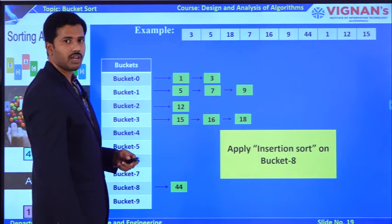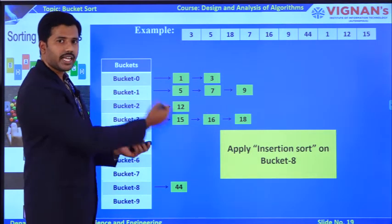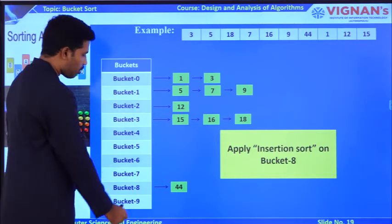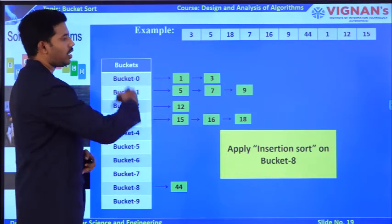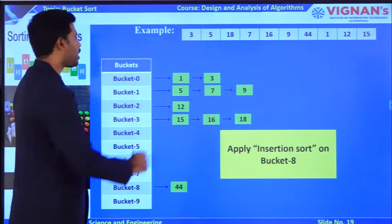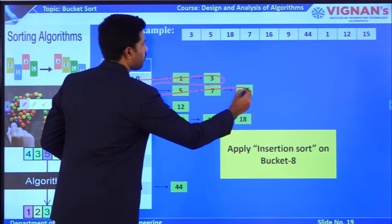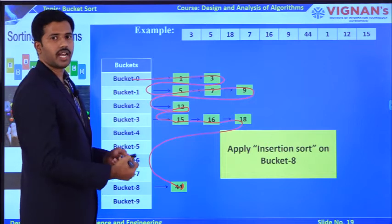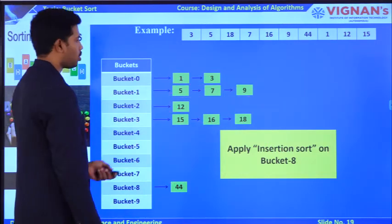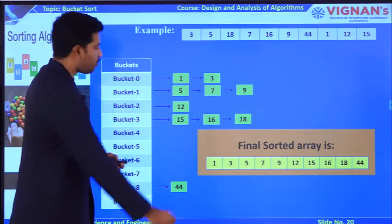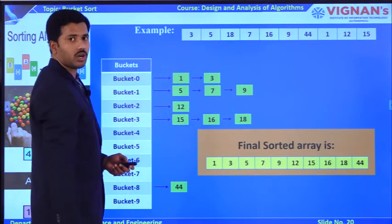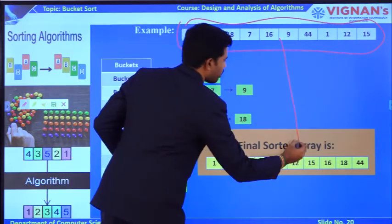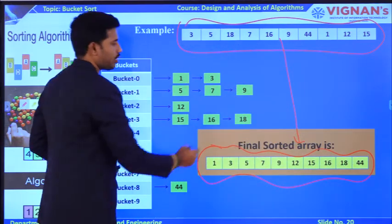Now, observing the elements in each bucket after insertion sort, can I take all elements linearly from bucket 0 to bucket 9? Yes, because all elements in each bucket are now in sorted manner. Taking them in order gives: 1, 3, 5, 7, 9, 12, 15, 16, 18, and 44. The final sorted array is obtained by concatenating all bucket contents in order from bucket 0 to bucket 9.